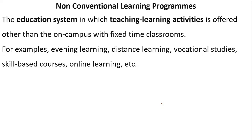Non-conventional learning programs are those where the teacher and student need not be present at the same time. For instance, in a distance learning course, they give you CDs to study — the teacher made that lecture in January but you are watching in July. So there is a separation in time and space between student and teacher. Teaching-learning activities are offered off campus and not at a fixed time. Examples include evening learning, distance learning, vocational studies, skill-based courses, and online courses.